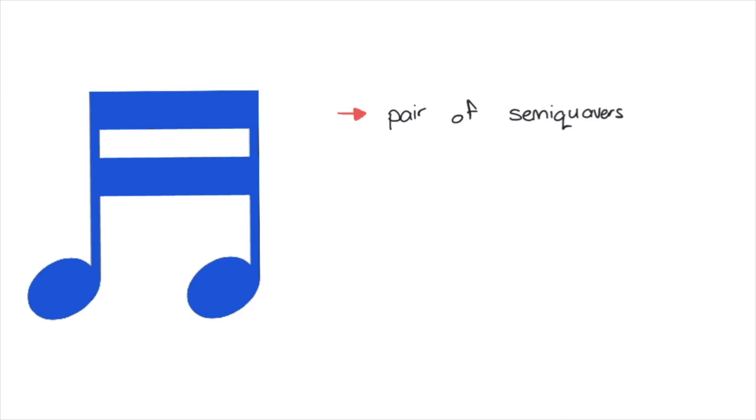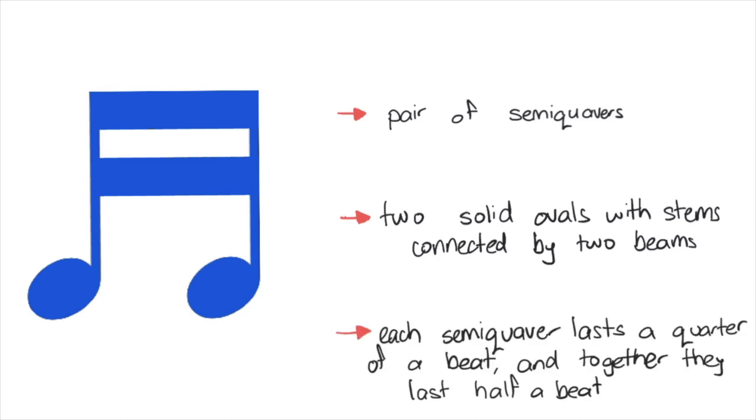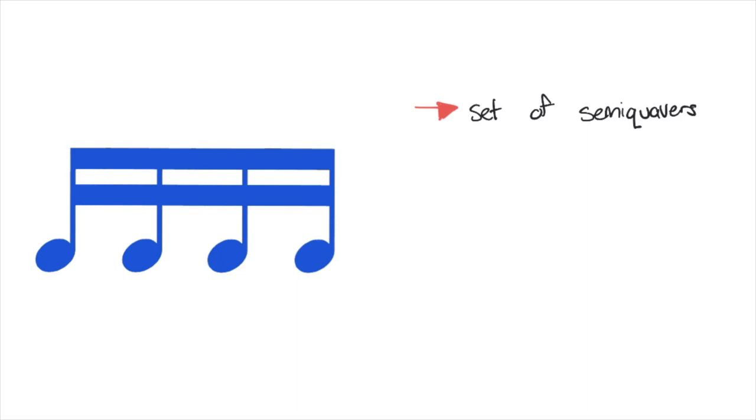This is a pair of semiquavers. It looks like two solid ovals with stems connected by two beams. Each semiquaver lasts a quarter of a beat, and together they last half a beat.